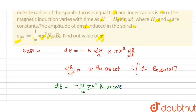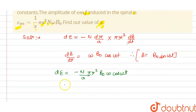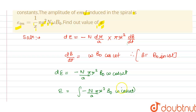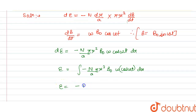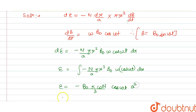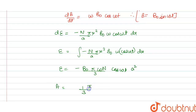So the differential EMF is minus (n/a)·πr²·B₀ω·cos(ωt)·dr. Integrating both sides, EMF equals minus (nB₀ω/a)·π·(r³/3)·cos(ωt), evaluated from 0 to a. After integration, the r³/3 term evaluated at r = a gives a³/3, so this simplifies with the factor of 1/3.